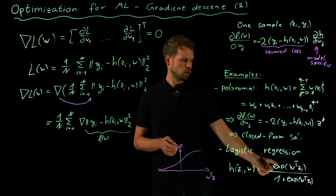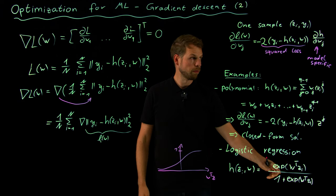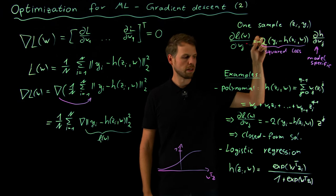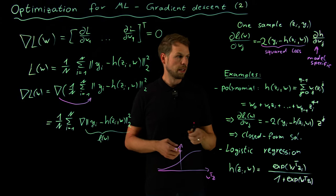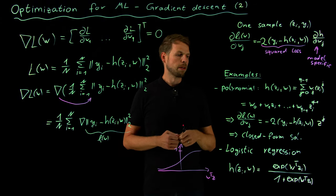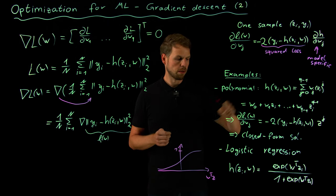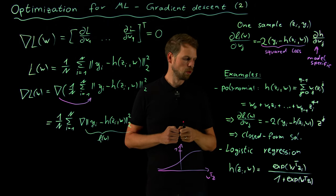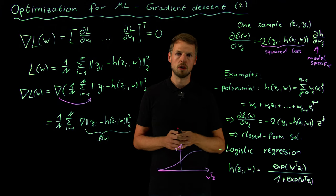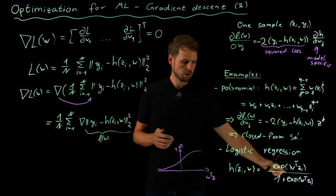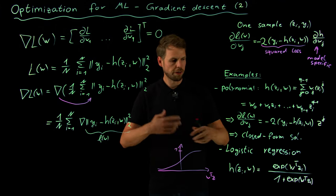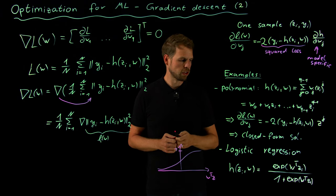But what we need to do is we need to take the derivative of this term and plug it in here into our model specific part, and then we have a gradient that we can evaluate. But we do not obtain a linear system, even for linear models, that we can solve in a closed form solution. And the next video is going to be all about the question of how to solve models of this type, to find models of this type in an iterative fashion. Thank you.